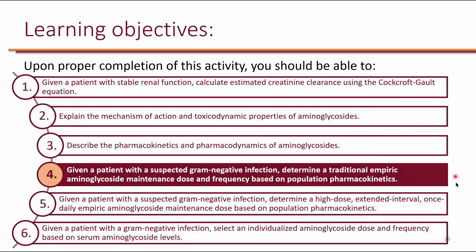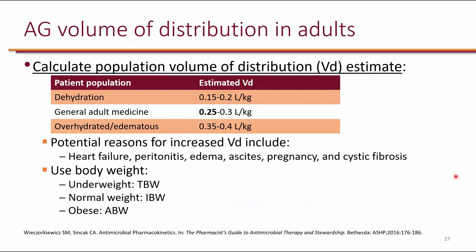We reviewed mechanism of action and PKPD of aminoglycosides. Our next learning objective is: given a patient with suspected gram-negative infection, determine a traditional empiric aminoglycoside maintenance dose and frequency based on population kinetics. Once you assess patient body weight and creatinine clearance, the next step is to calculate population volume of distribution. Because aminoglycosides are hydrophilic, they distribute primarily in extracellular fluid, making fluid status extremely important. In a general population with normal fluid status, the estimated volume of distribution is about 0.25 liters per kilogram.